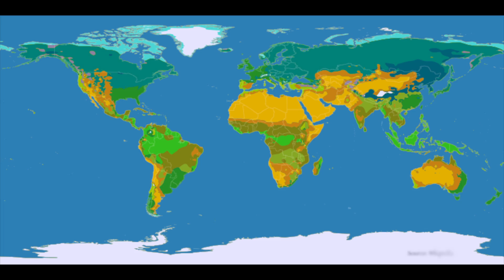The concept of geographic position will be critical going forward. So in summary, the latitude of the GP is declination, and the longitude of the GP is Greenwich Hour Angle.